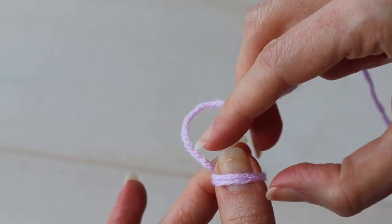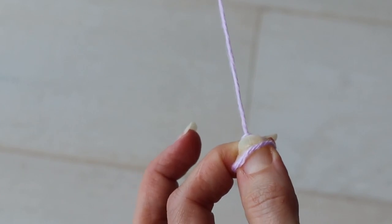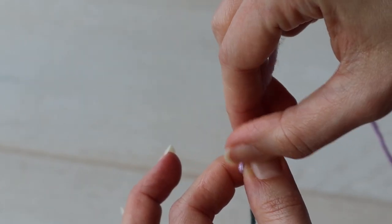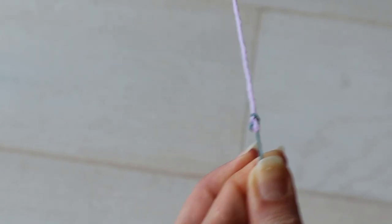Inch the loops up to the tip of your thumb and pull. The first strand should recoil first, and then the second one. And if all goes well, you'll have your little knot.